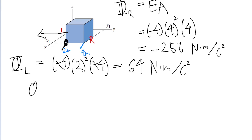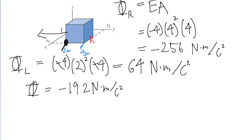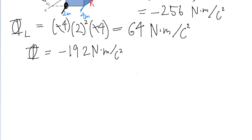To find the total flux through this cube, we just add the two values together: negative 256 plus 64, which gives us a total flux of negative 192 newton meters per coulomb squared. That is the total flux through the Gaussian surface.